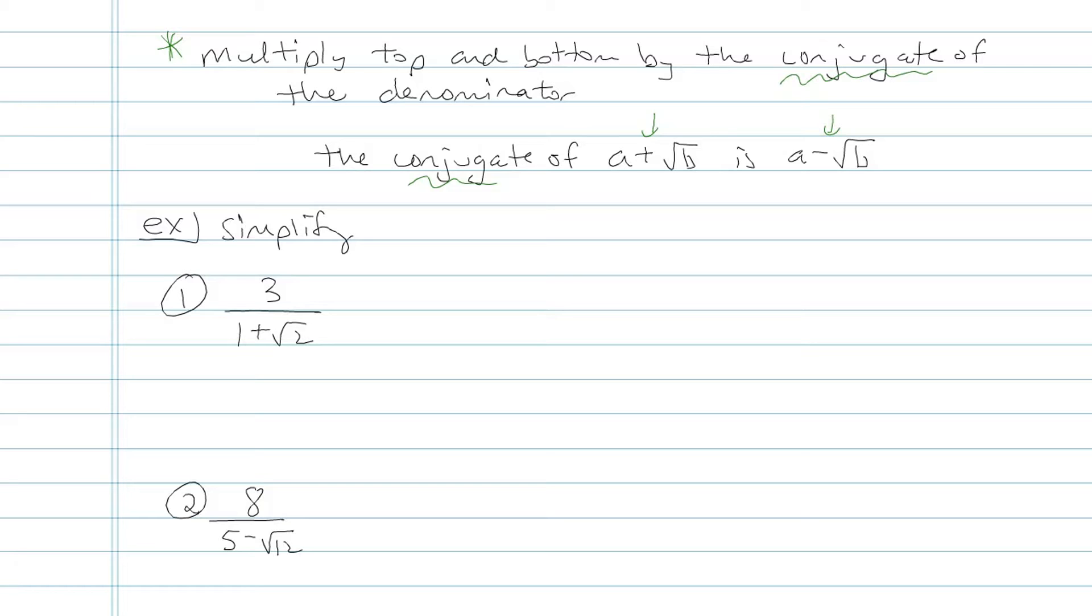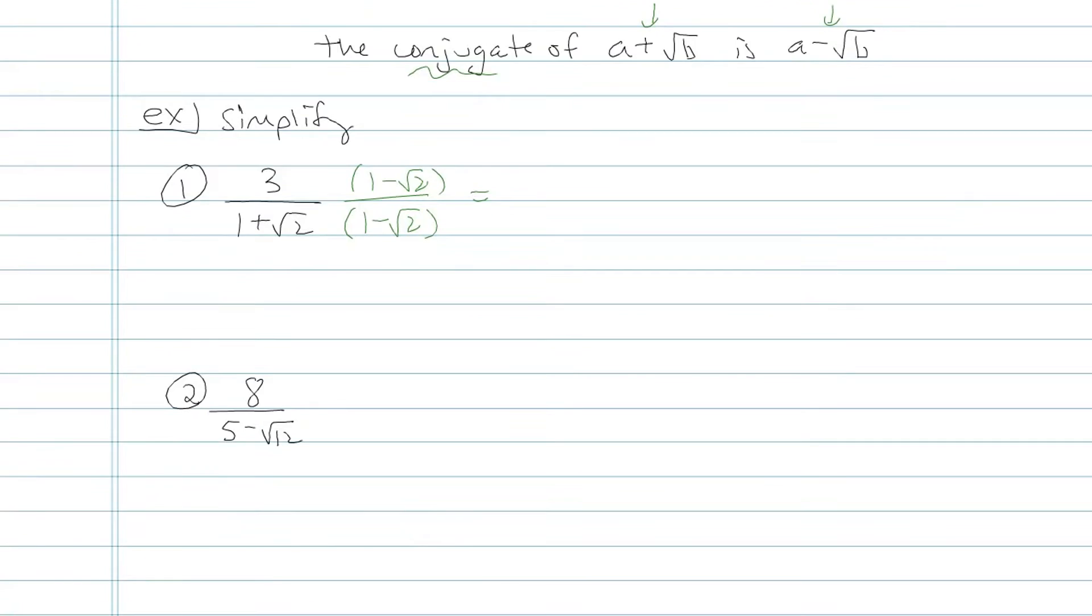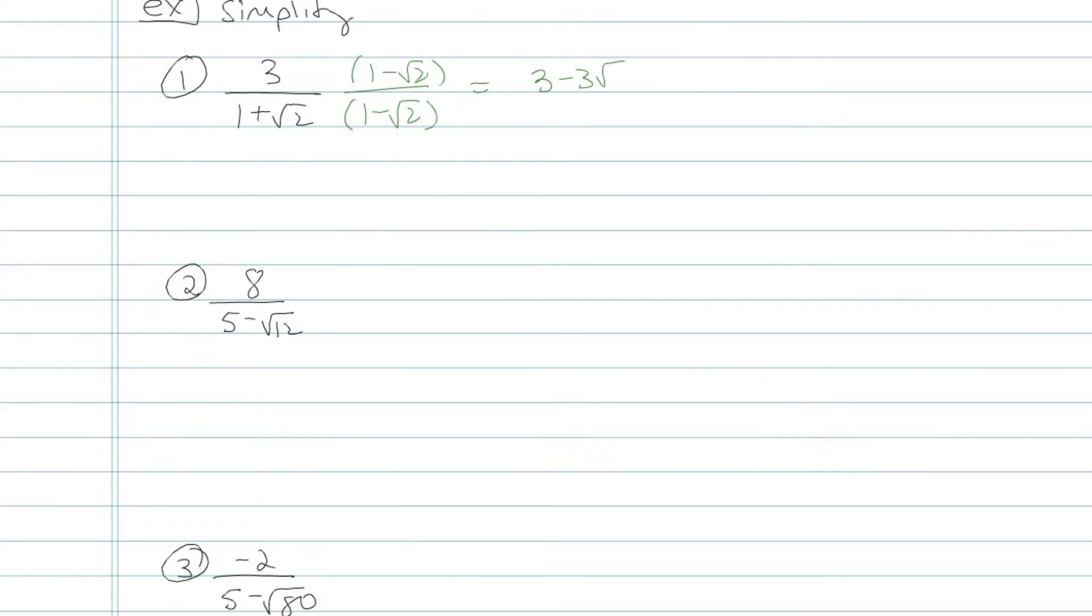For the first one, I want to look at the bottom and decide what the conjugate is. The conjugate of one plus root two would be one minus root two. I'm going to multiply top and bottom by one minus root two. On the top, I'll distribute the three. Three minus three root two, fine. On the bottom here, I need to FOIL. FOIL meaning firsts, outers, inners, lasts. And you'll notice those two inner terms cancel out. So I really have just one minus two there, which is negative one. My whole bottom just comes into negative one. And I'm happy because there's no longer any radicals in the bottom. Simplify that. I'll have negative three plus three root two.